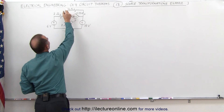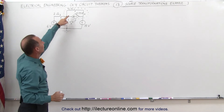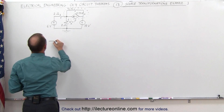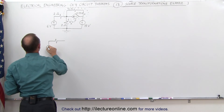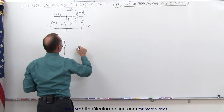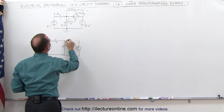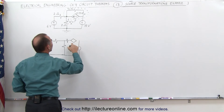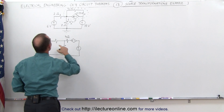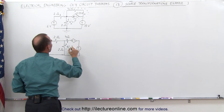First, we're going to simplify this. We're going to convert from a dependent current source to a dependent voltage source, which means the resistor in parallel now becomes a resistor in series. Our 2 ohm resistor is still there, our 6 volt voltage source is still there, we still have our 18 volt voltage source. What's changed is we convert that into a resistor and a dependent voltage source — plus or minus, still to be determined. The 4 ohm resistor has moved into series, and we still have two 2 ohm resistors and are looking for the voltage across those two points.